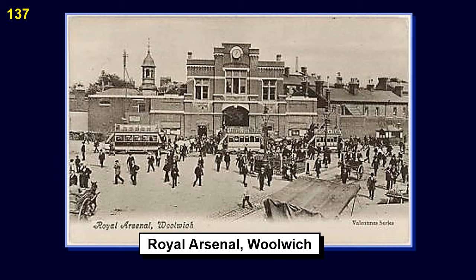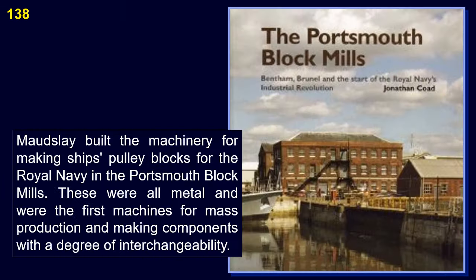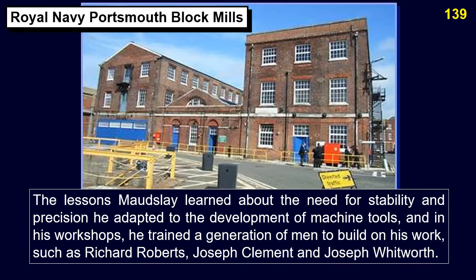This is the Royal Arsenal at Woolwich in the UK. Maudsley built the machinery for making ship's pulley blocks for the Royal Navy in the Portsmouth block mills. These were all-metal machines and were the first machines for mass production, making components with a degree of interchangeability. The lessons Maudsley learned about the need for stability and precision he adapted to the development of machine tools, and in his workshops he trained a generation of men to build on his work, such as Richard Roberts, Joseph Clement, and Joseph Whitworth.